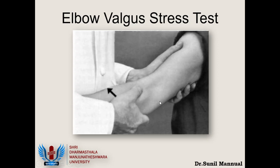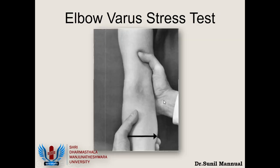We are also looking for elbow stability — checking for valgus and varus stress. The examiner stabilizes the arm, grasps the forearm, and tries to open the elbow medially with valgus stress to check whether the ulnar collateral ligament is intact. Then reversing, he gives a varus stress to check whether the radial collateral ligament is intact. These are the valgus stress test and varus stress test, very similar to the knee.